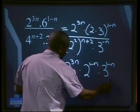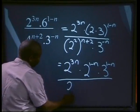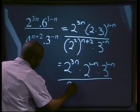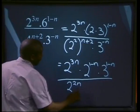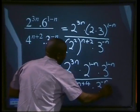Divided by 2 to the power of 2 times n, and 2 times 2, which gives us 2n plus 4 times 3 to the power of minus n.